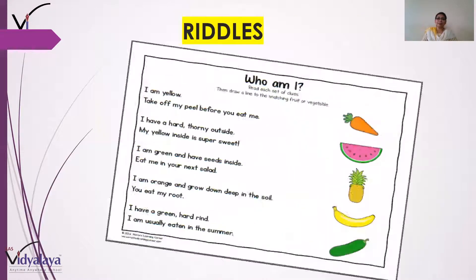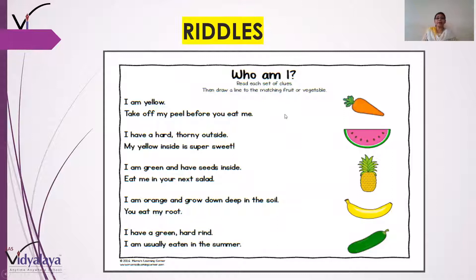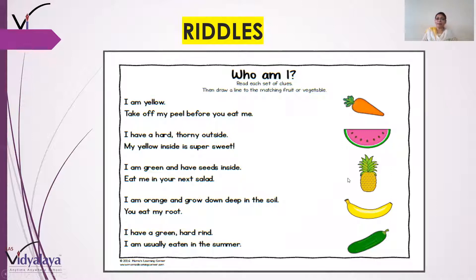Ab kuch riddles dekhte hain — mazedaar si paheli hai. Who am I? I am yellow — take off my peel before you eat me. Toh mera chilka utaaro isse pehle ki mujhe khao, aur chilka utaar ke khaate ho — that is a banana! I have a hard thorny outside, and my yellow inside is super sweet — yaani bahar se bhoat hi sakht aur kaante hain, aur andar se jo mera yellow hissa hai woh bhoat hi meetha hai. Toh ye kaun hoa? Pineapple hai na — ananas!